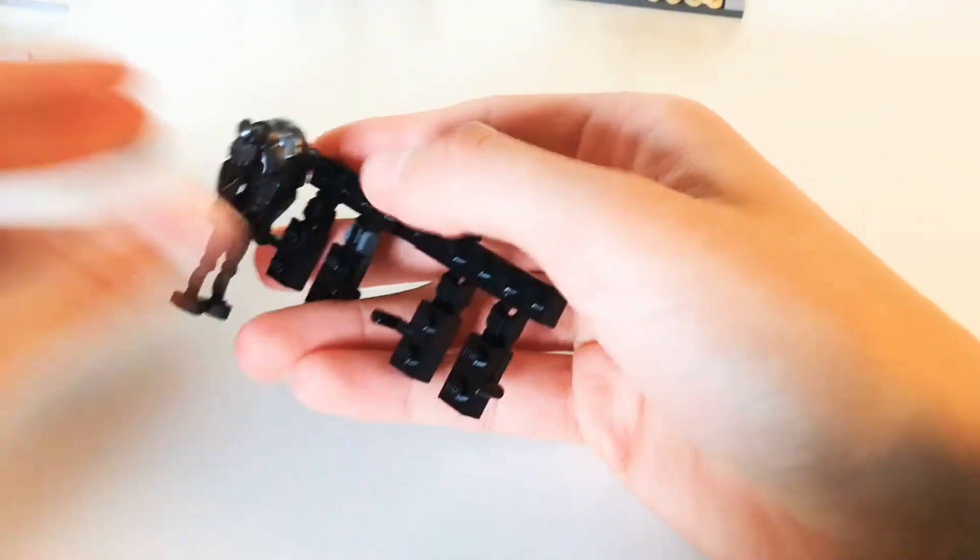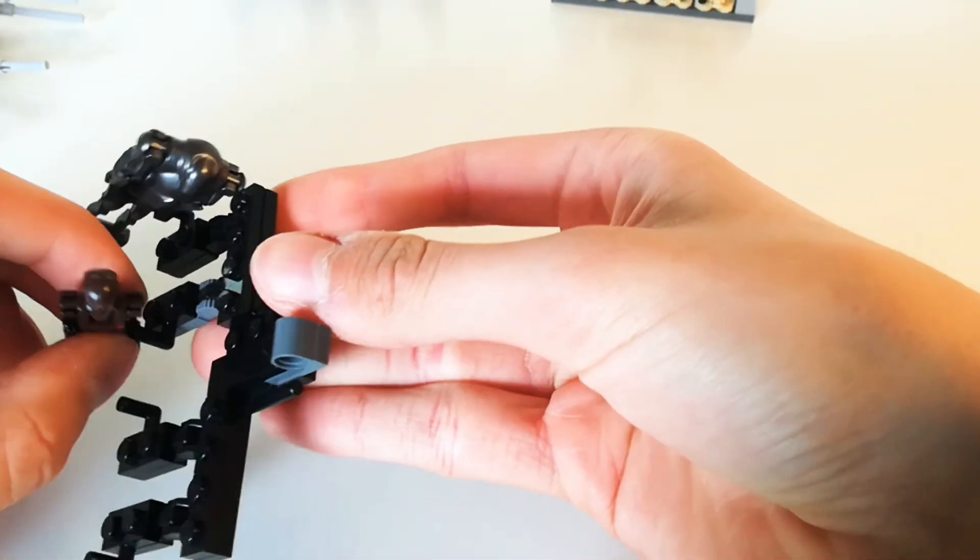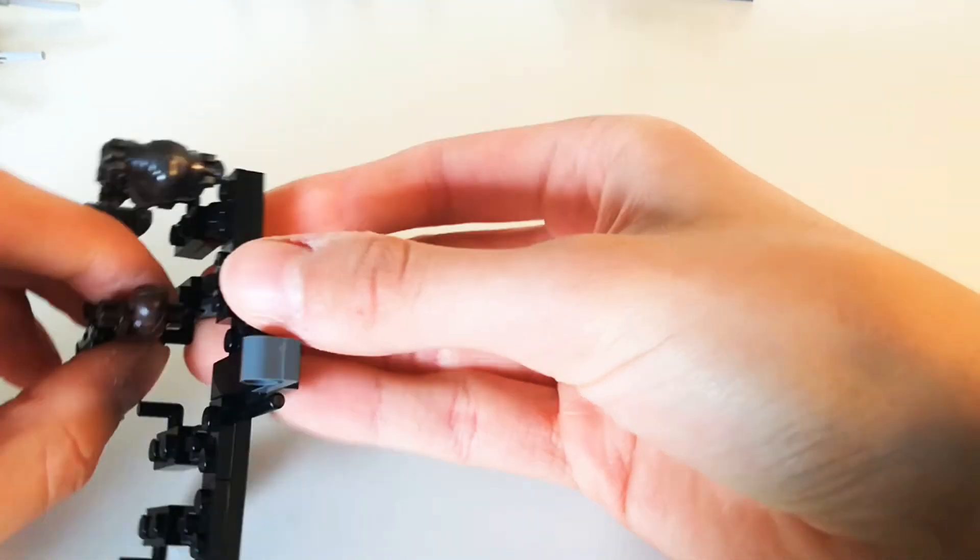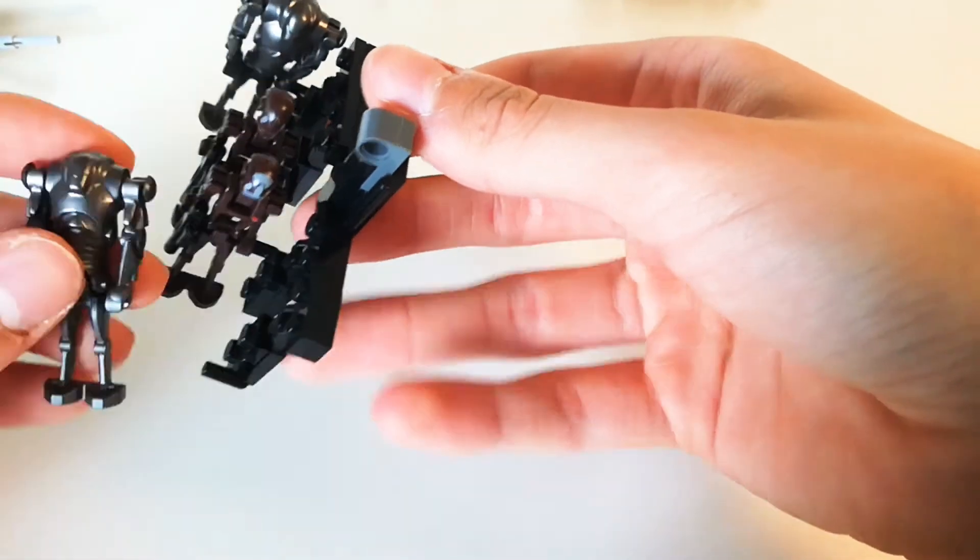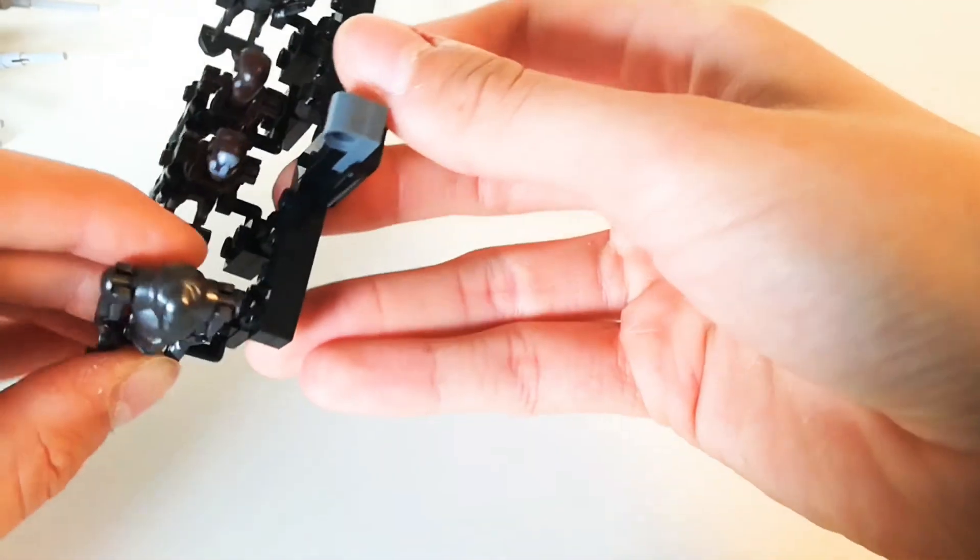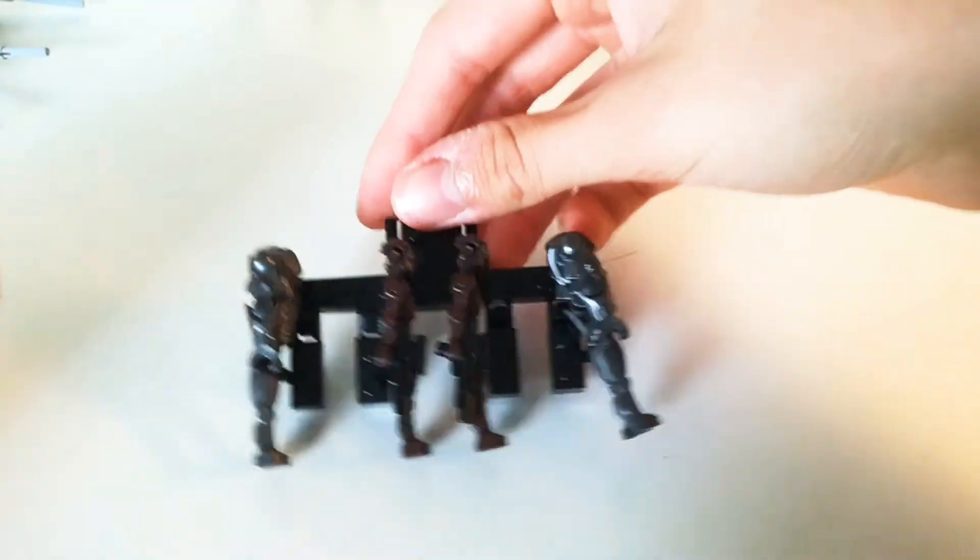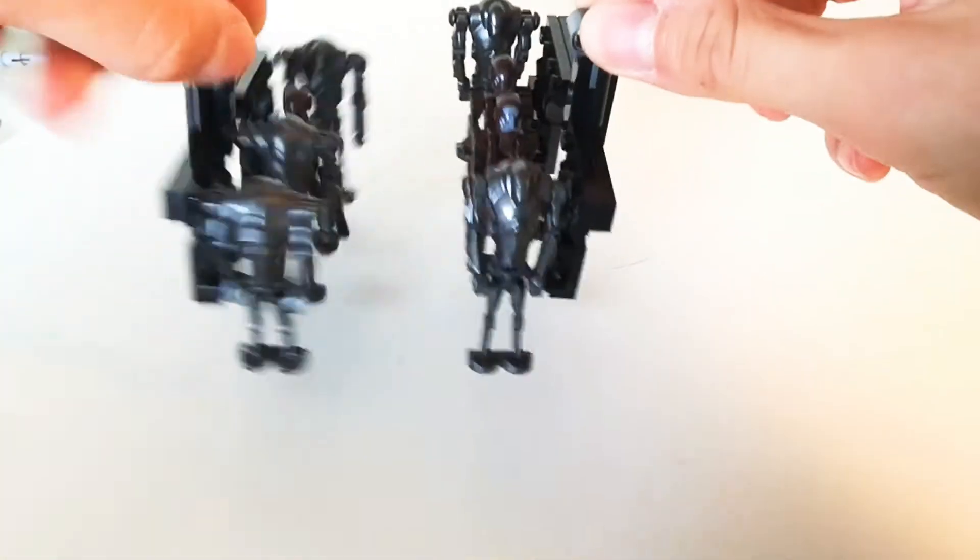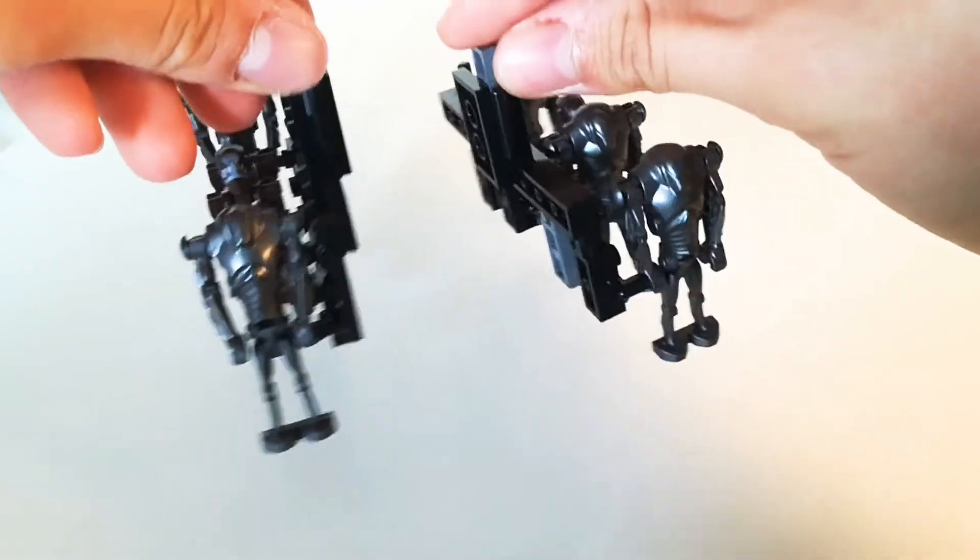Then you place your big droids, put their hands over here. You could fill them out with super battle droids. I don't have enough to fill all four spaces, so I'm gonna use commander droids because they're the same height, they use the same legs. So you repeat it twice. Now I'll show you how to put it on.